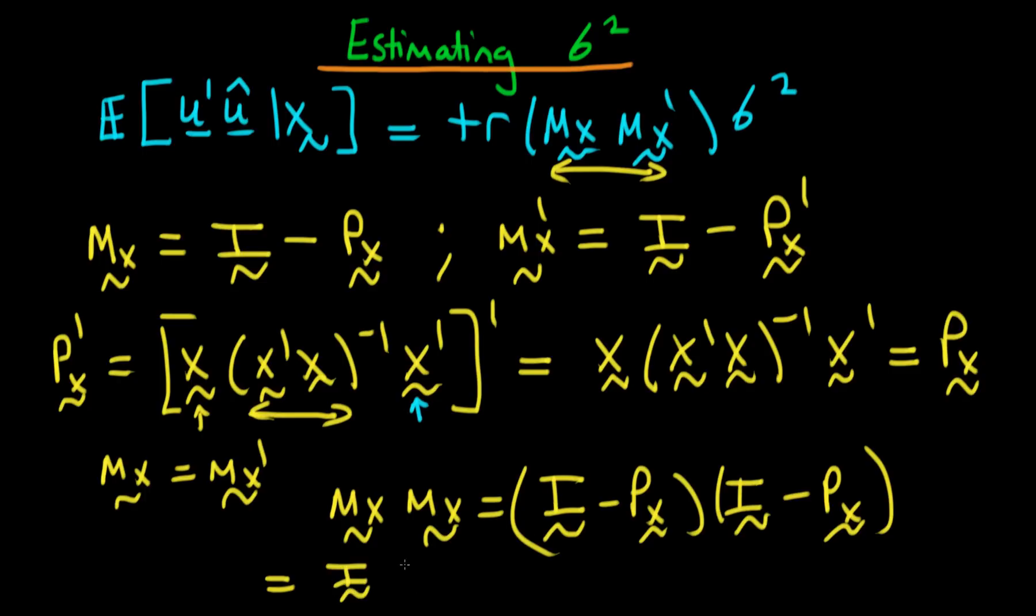Then the next term is going to be i times px which is just going to be px. And then we get another px from px times i.